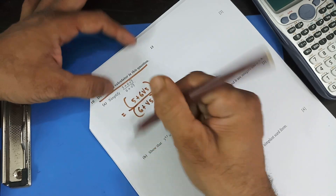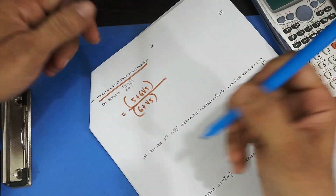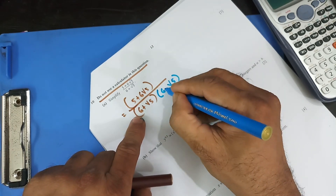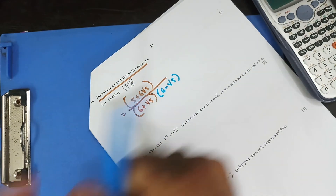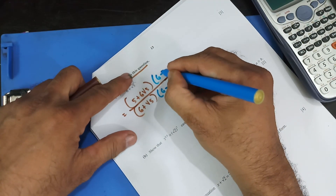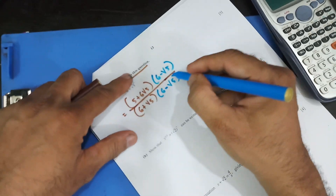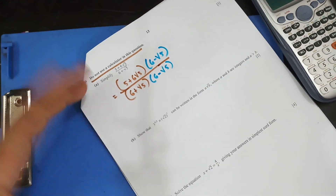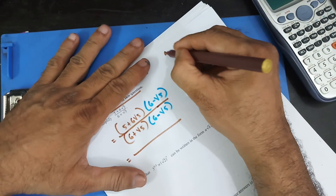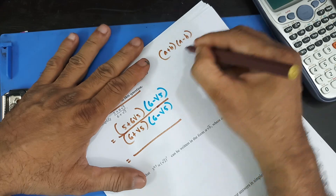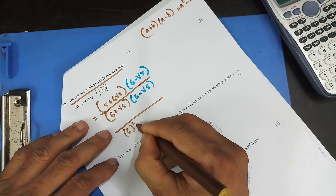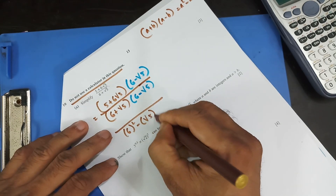The conjugate pair means the same number with a different sign in the middle. So it's going to be 6 and square root 5, but with a different sign. I cannot do that unless I do the same thing with the numerator: 6 minus square root 5. I'm not changing anything. So that is going to be in the denominator an (a + b)(a - b) form, that means a squared minus b squared. So that's going to be 6 squared minus square root 5 squared.